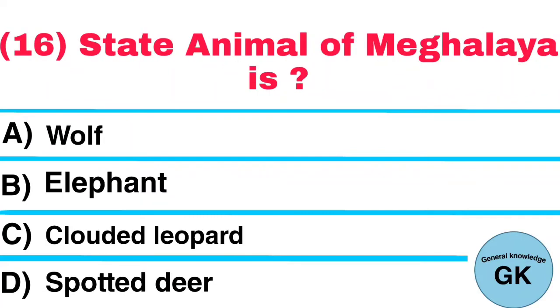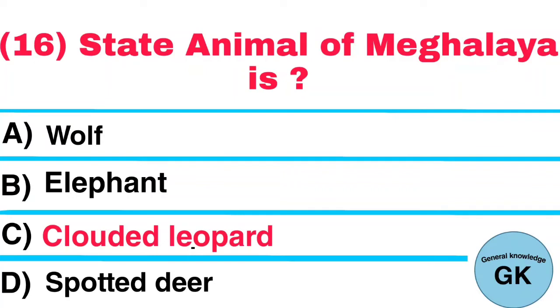Question Number 16. State Animal of Meghalaya is: A. Wolf, B. Elephant, C. Clouded Leopard, D. Spotted Deer. Answer: Clouded Leopard.